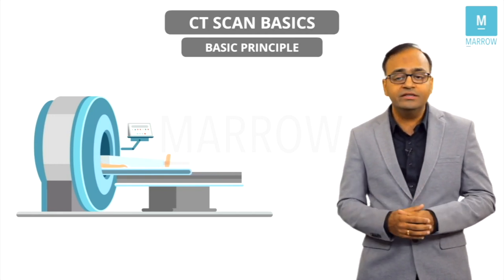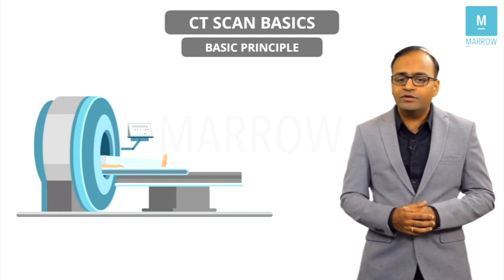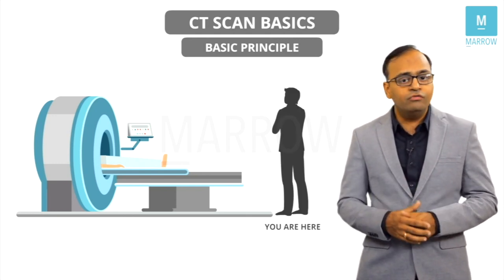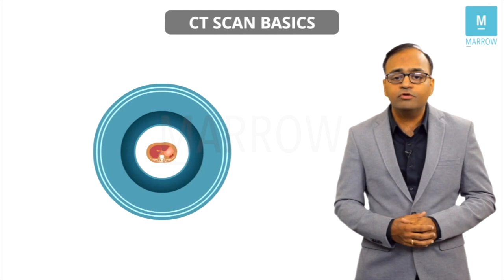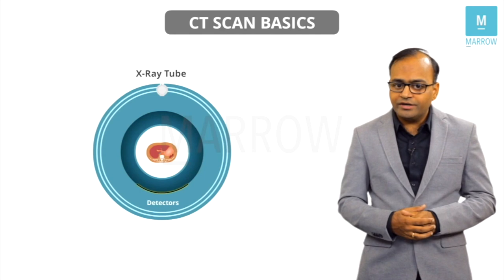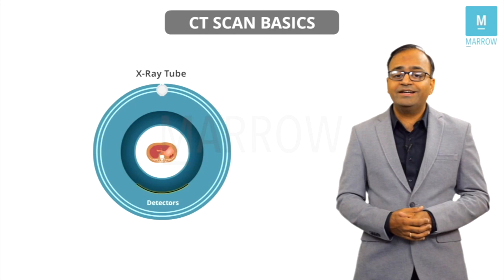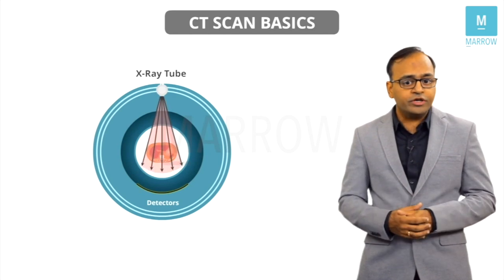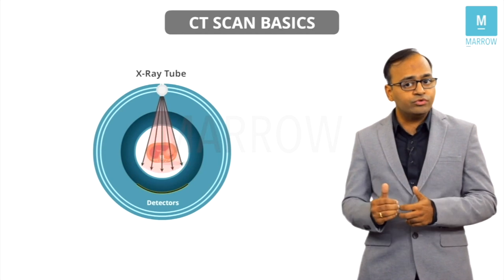Now, suppose the table has slid in and the machine has started, and you are standing at the foot end of this particular patient, facing directly towards the machine — this is how it would appear. If you open up the CT scan gantry, inside there is an x-ray tube, and there are detectors to detect the x-ray beam. The function of the x-ray tube is to produce an x-ray beam, which passes through the patient's body, creating an image on the electronic detectors.